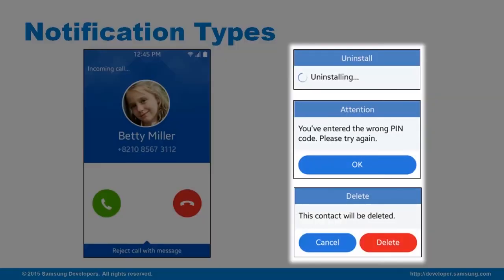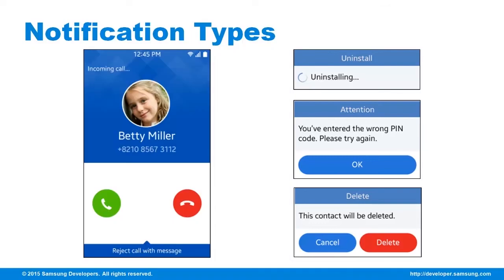Next, we have pop-ups of three types. Depending on what you want the user to do, you can choose from: basic information delivery that deactivates on its own after some time; important information delivery which requires interaction to deactivate; and action or delete choice that asks the user to make a decision.